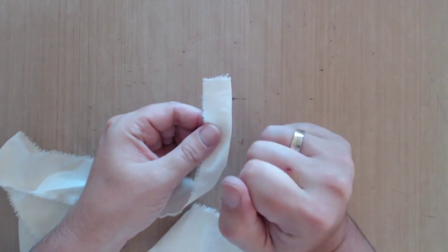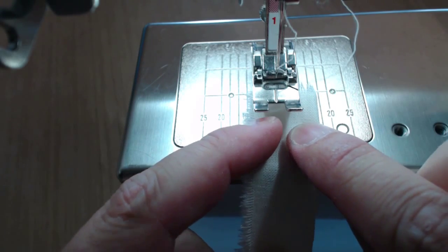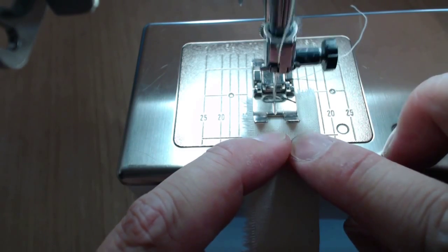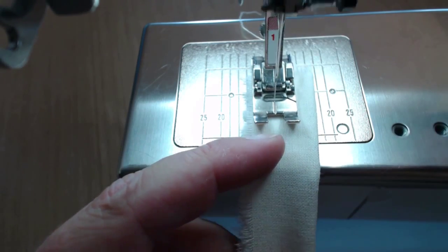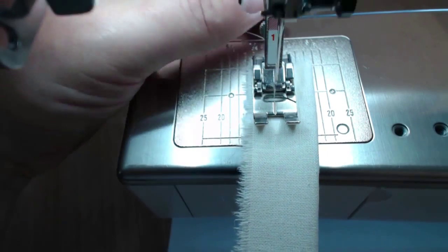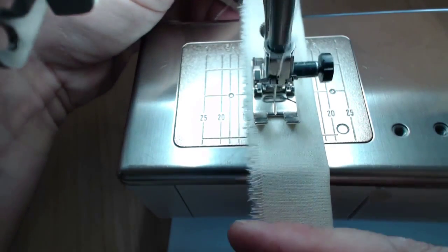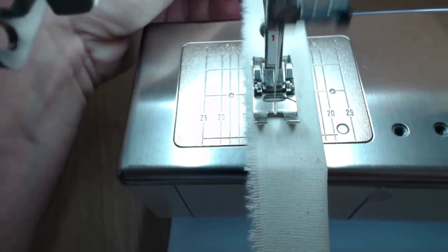This strip will now be folded in half and sewed with the machine. I saw some other tutorials where this has been done with a heat gun. But for me sewing works best. First because I think it's very handy for me and second because the cloth doesn't get that stiff before we even start it.